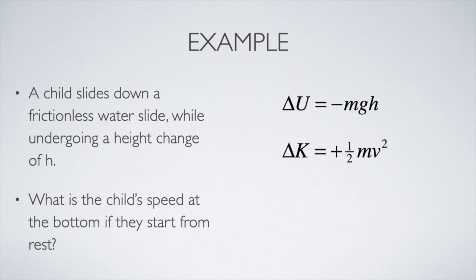Our kinetic energy change goes from zero to one half mv squared, so our delta K is plus one half mv squared. There's no friction and the normal force is perpendicular to the displacement at all times, so there's no work being done by or on the environment.